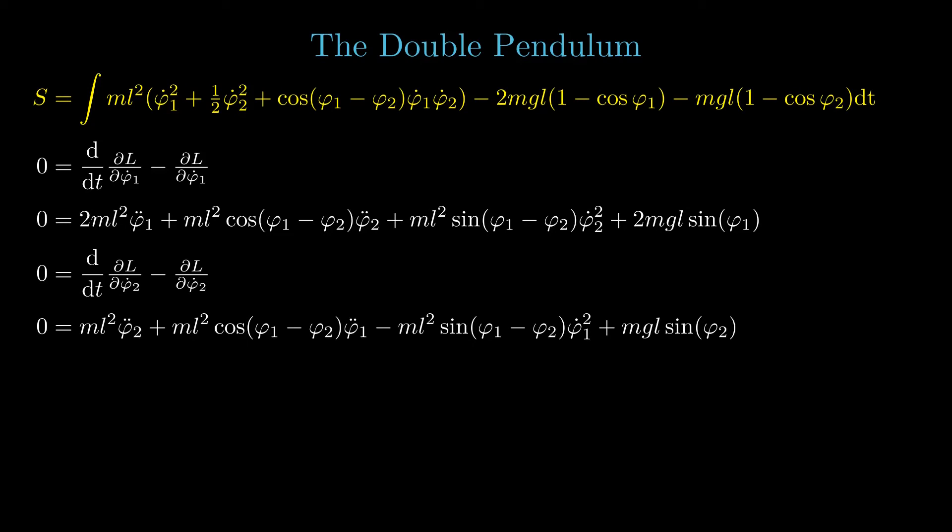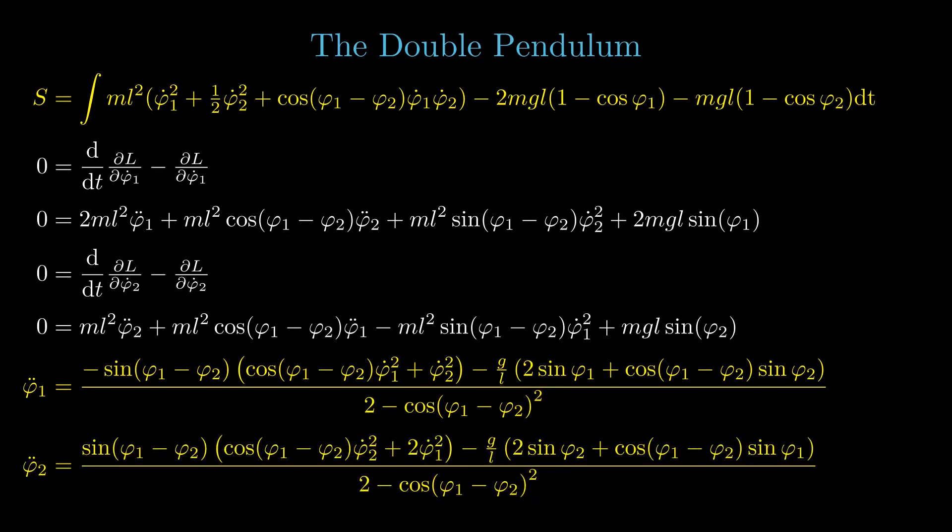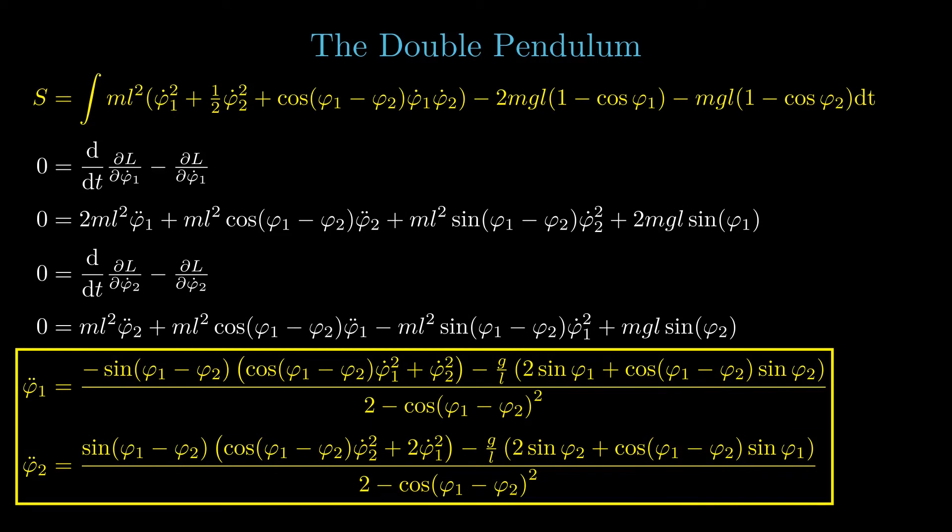The acceleration, however, only appears linearly. One equation can be solved for phi1 double dot for instance and plugged into the second equation to obtain an equation for phi2 double dot only and vice versa. The computer almost doesn't care how long the equations are. Once they are implemented, it patiently calculates the tiny changes of the angle for every single step in time.